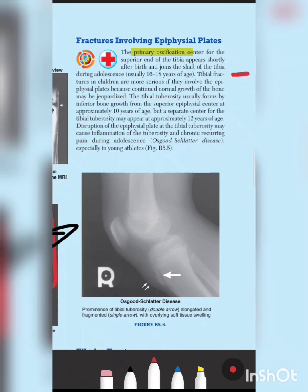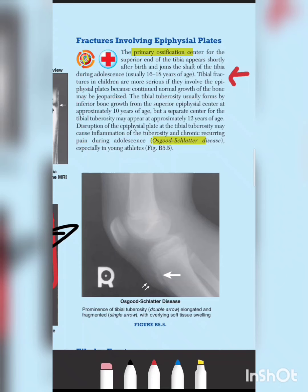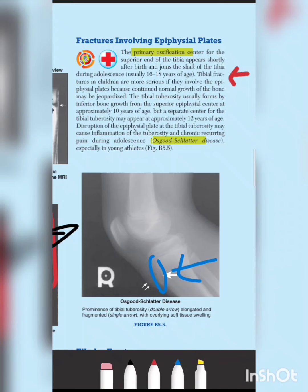Tibial fractures in children are very dangerous because of the epiphyseal plates present. Epiphyseal fractures are particularly dangerous because they can disrupt normal bone growth. A disease called Osgood-Schlatter disease involves epiphyseal disruption at the tibial tubercle. This condition results in chronic and recurring pain over a long period of time.